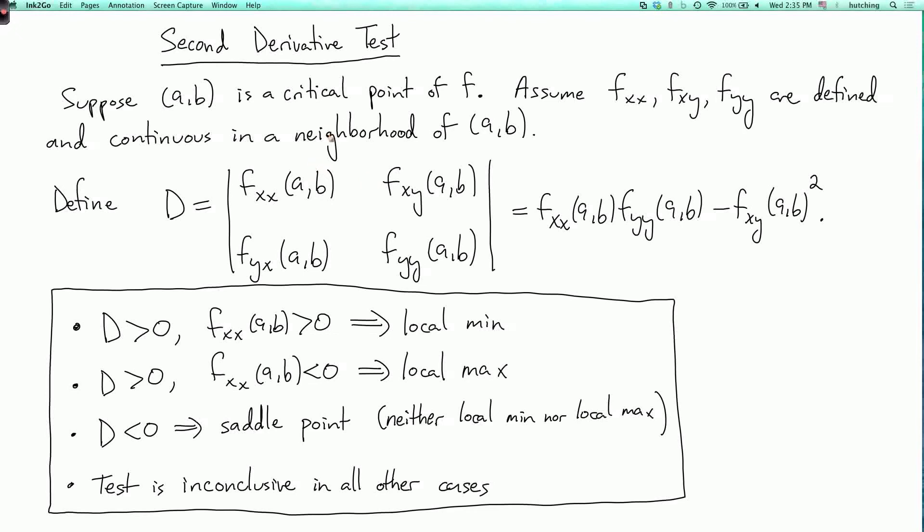And since this matrix is symmetric, its eigenvalues are real. This first case is where both eigenvalues of the matrix are positive. The second case is where both eigenvalues are negative. And the third case is where one is positive and one is negative. And the remaining cases are where there's a zero eigenvalue.